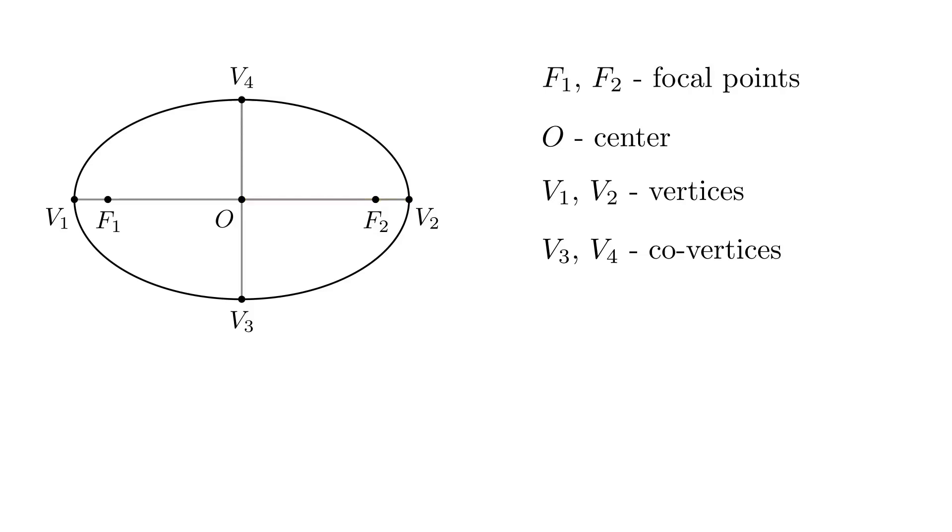The distance from the center to a vertex is denoted by a and it's called the semi-major axis. The distance between the center and the co-vertices is denoted by b and it's called the semi-minor axis. And the distance between the center and the focal point is denoted by c and it's called the linear eccentricity of an ellipse.